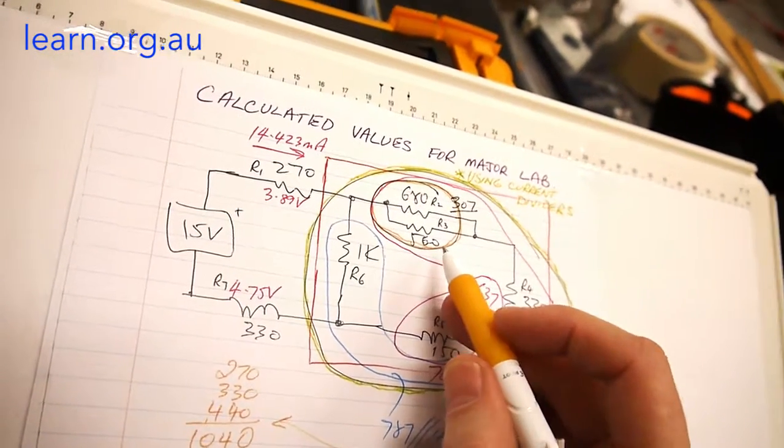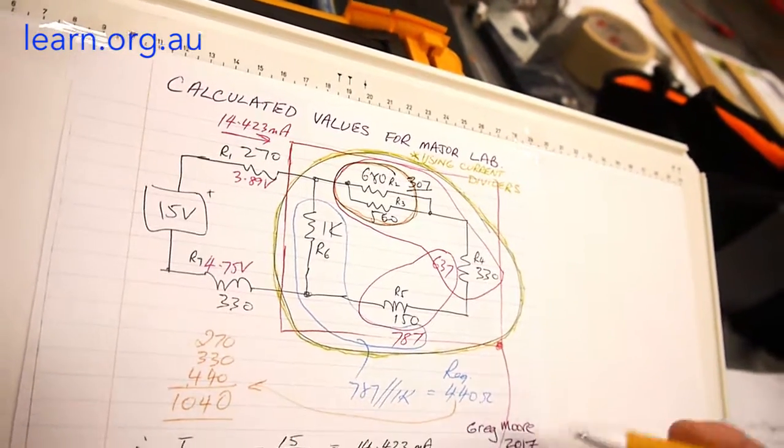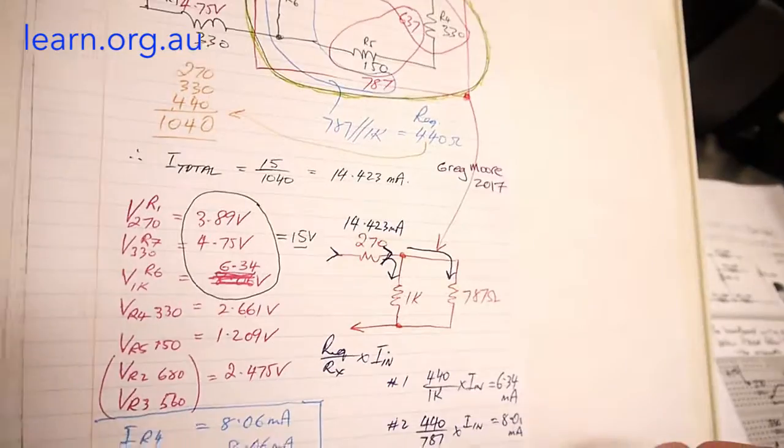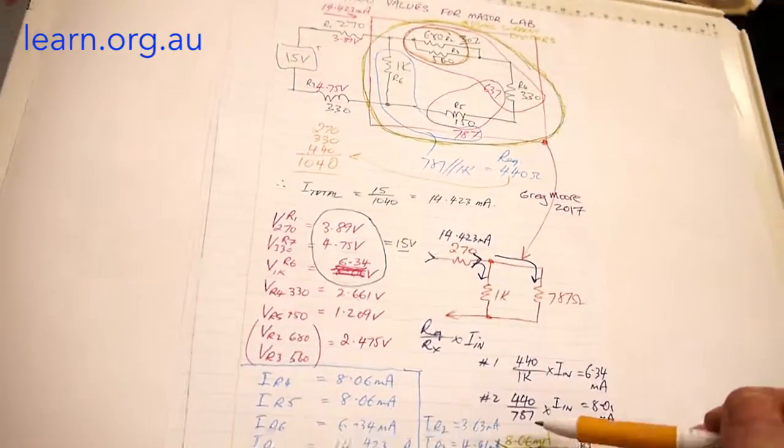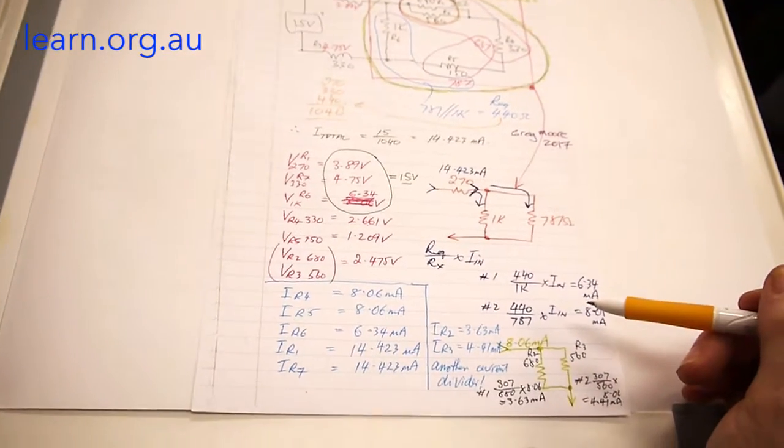So the video that we saw by Schuler did it all using Ohm's law like basics, and I did it using current dividers which are a ratio method. On the day I tend to think that is an easier way to do it, certainly for me.